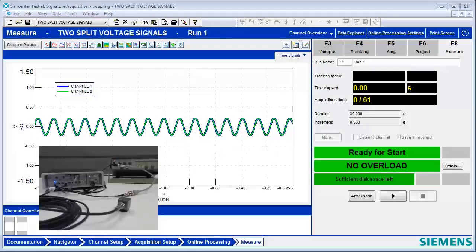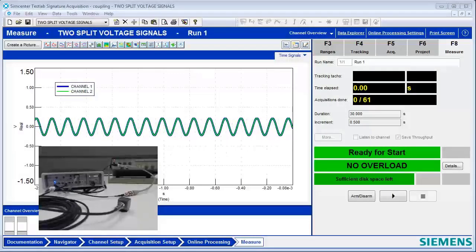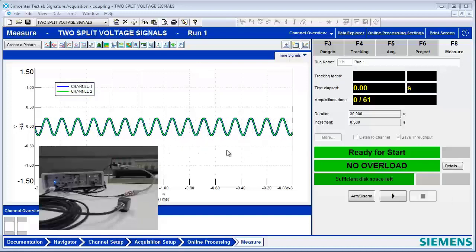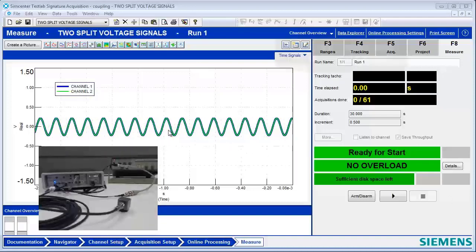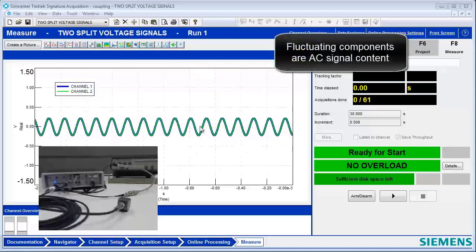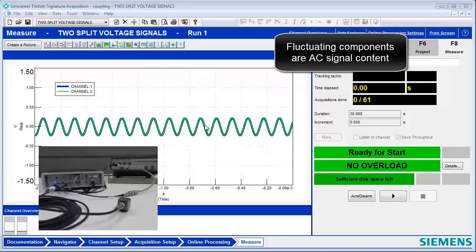Today we're going to talk about AC and DC coupling, and we've got a signal that we're going to measure here. What type of signal is this, Tom? This is an AC signal. It's AC because it's fluctuating around. Yep, fluctuating around on zero.